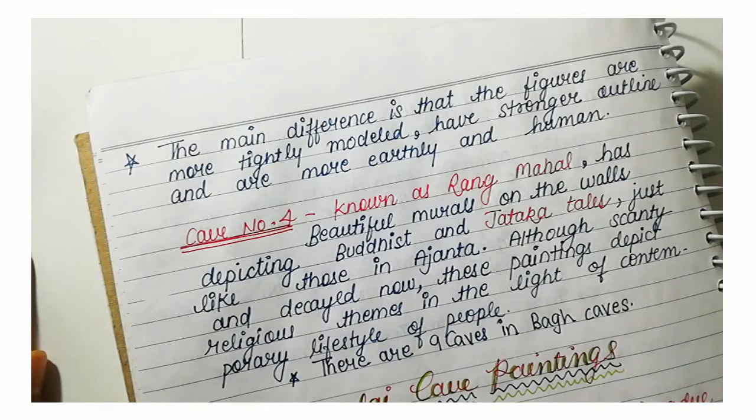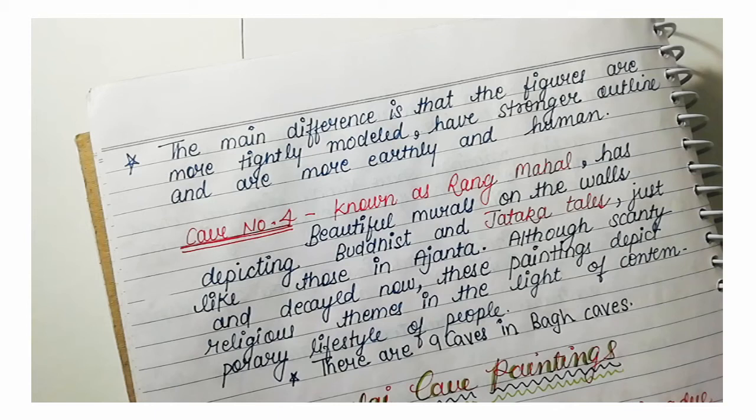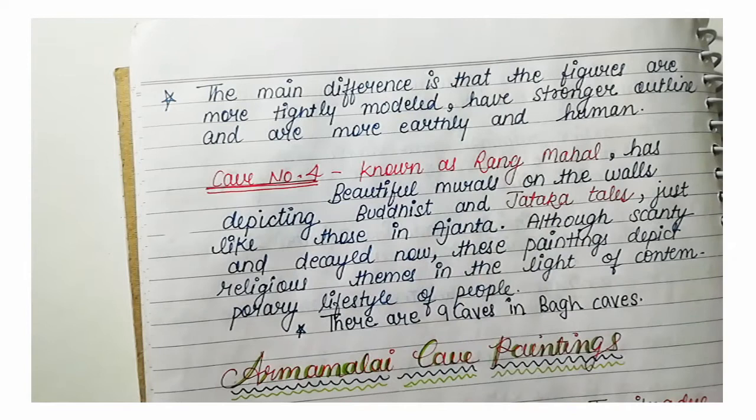The main difference is that the figures are more tightly modeled, have stronger outlines, and are more earthly and human. In Bagh cave paintings, cave number 4 is known as Rang Mahal. There are beautiful murals on its walls depicting Buddhist and Jataka tales.